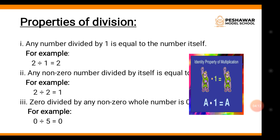Property number two: any non-zero number divided by itself is equal to one. جب بھی ہم کسی number کو اسی number پہ divide کریں تو result one ہوگا — like two divided by two is equal to one. Property number three: zero divided by any non-zero whole number is zero. جب بھی آپ zero کو کسی بھی non-zero number پہ divide کریں تو answer zero ہی رہے گا — like zero divided by five is equal to zero.